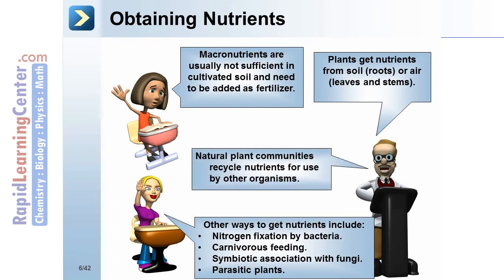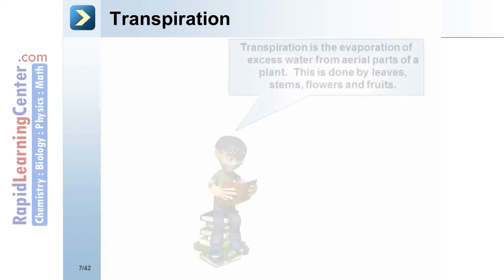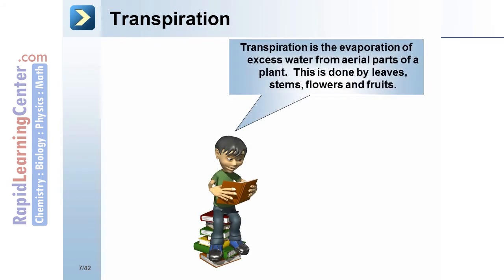Natural plant communities recycle nutrients for use by other organisms. Transpiration is the evaporation of excess water from aerial parts of plants, done by leaves, stems, flowers, and fruits.